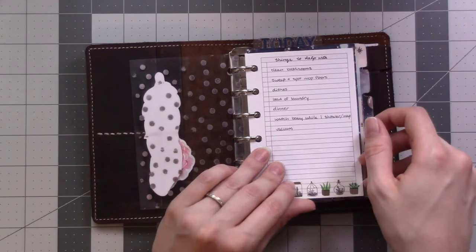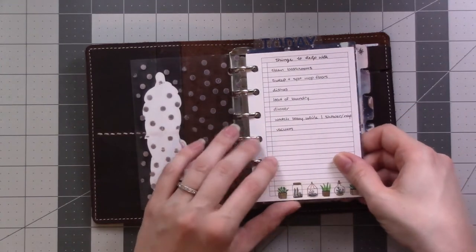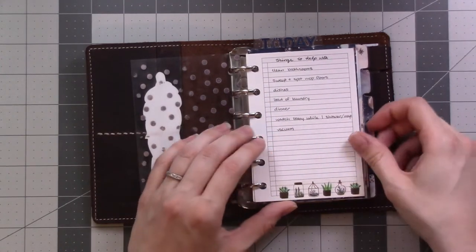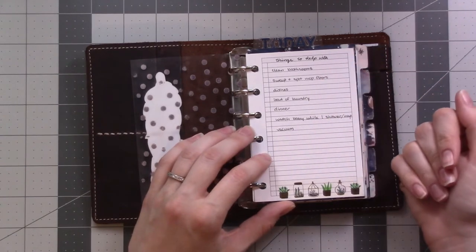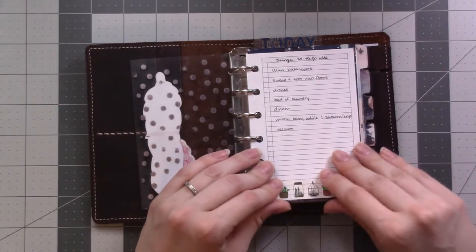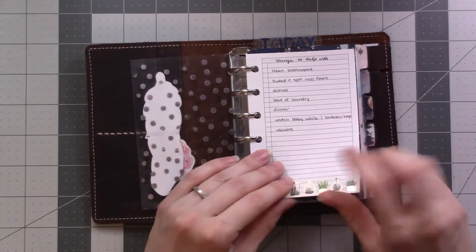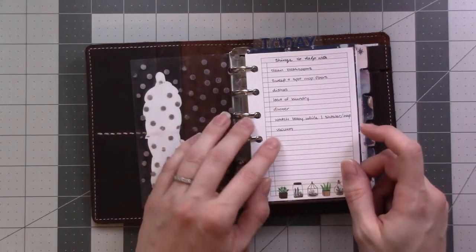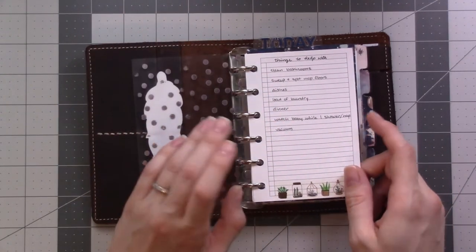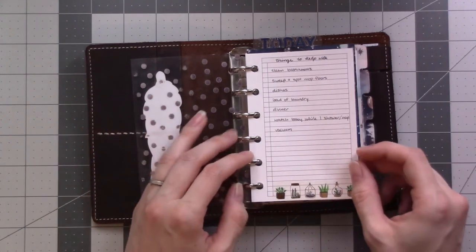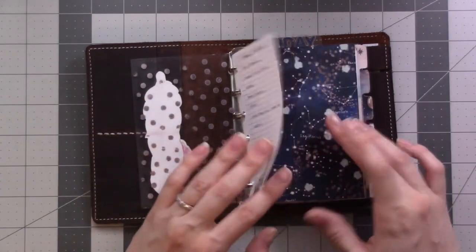So, this page was supposed to be useful after the baby was born. It was a list of, like, if people were like, hey, can I help with something? This would be the list I would refer them to. I think it was useful once, like, when I handed my planner to my mom to show her what it looked like. And she was like, oh, can I do one of these things? And she did, but mostly it's just kind of a reminder of things that I ought to take a look at every so often.